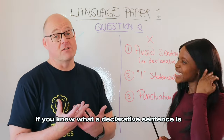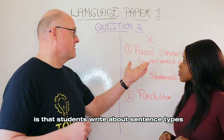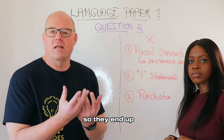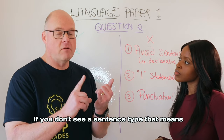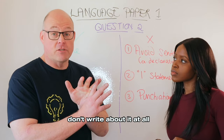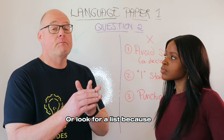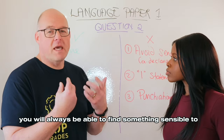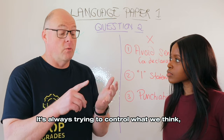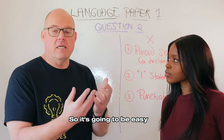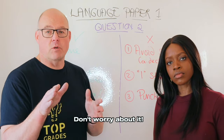One of the big problems the examiner's report keeps flagging is that students write about sentence types but don't know what to say about them, so they end up not getting any marks. Two bits of advice: if you don't see a sentence type that means anything to you, don't write about it at all — the third bullet point is actually irrelevant. Or look for a list, because you will always find something sensible to say about why the list is there; it's always trying to control what we think, feel, or predict. If you can't write about a sentence type, you can still get full marks.